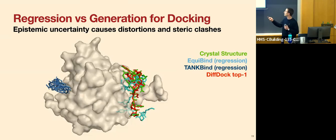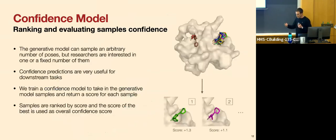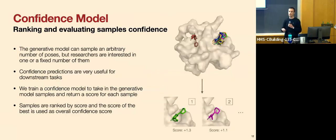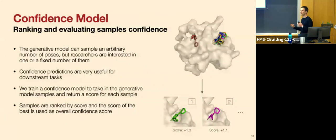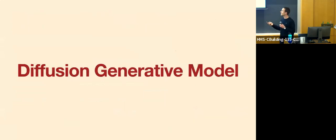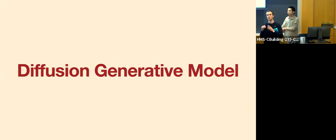To conclude this section: we train a generative model, but researchers typically only want one or a few predictions. So we train a confidence model to rank the different complexes the generative model produces. We return the top-scoring ones to the user along with a confidence score — similar in spirit to AlphaFold's confidence scores. This confidence model is a classification model built on top of the diffusion model outputs.